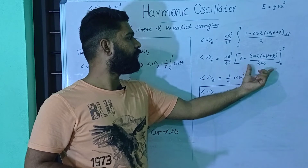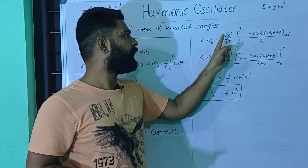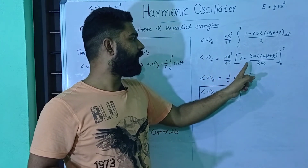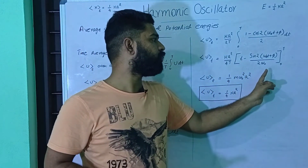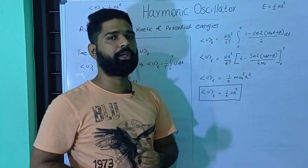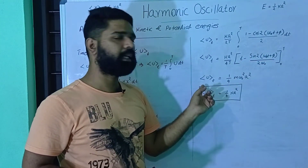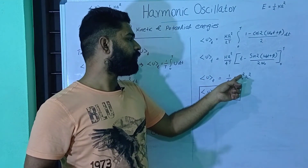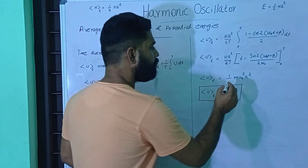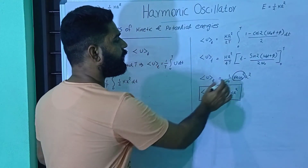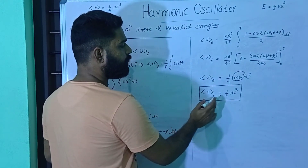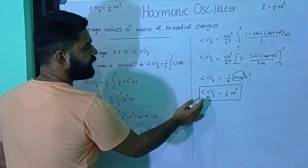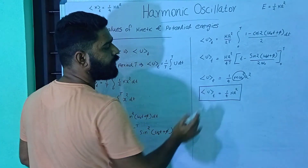Evaluating the integral: Ū = (ka²)/(4T) · [t − sin(2ωt + φ)/(2ω)] from 0 to T. Applying the limits, we get the time average potential energy equal to (1/4)mω₀²a², which simplifies to Ū = (1/4)ka².